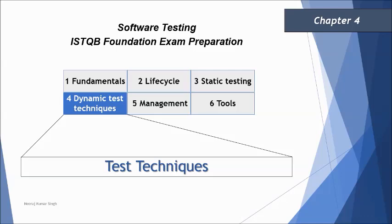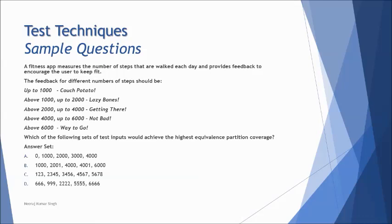So we'll be quickly moving to the same where we have the very first question on the equivalence partition. If you see the question, it's about like they have been giving you different ranges. As you can see, like up to 1,000, it is couch potato, above 1,000 up to 2,000 lazy bones or something. So it's just like a fitness tracker or a system which is just giving you certain ranges.